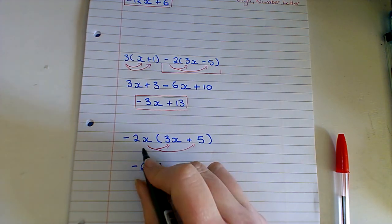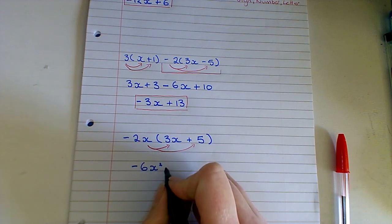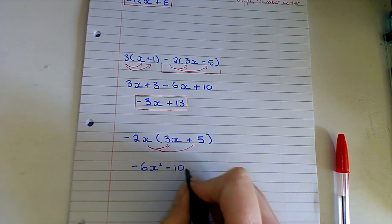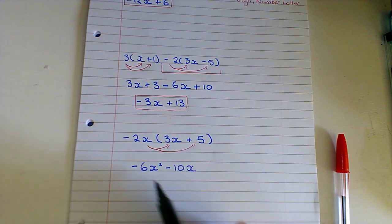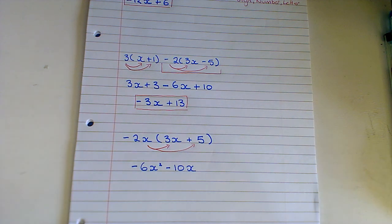And then for the second part here, you're going to have a minus by a positive which is minus. 2 by 5 is 10. And then we have the letter as well here. We can't simplify here. We have an x squared term and an x term. So this is our answer.